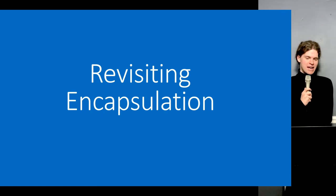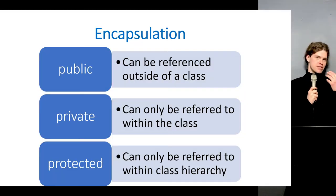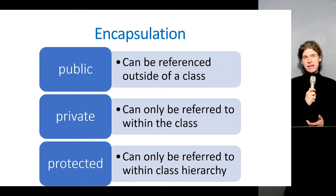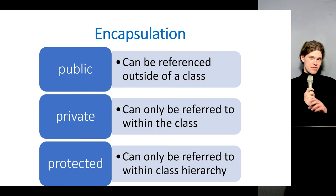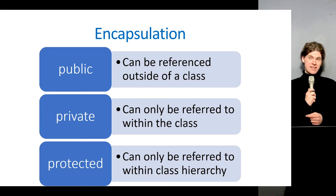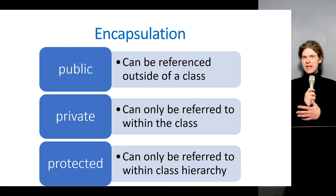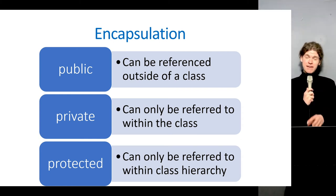Let's talk about encapsulation again. We introduced this in the first lecture — you've seen public methods and private data, and possibly private methods. Private means you can only access or call particular members within the class they're defined in. A private method can only be called from another method located in that same class, and private variables can only be referred to and assigned in the class where they're defined.